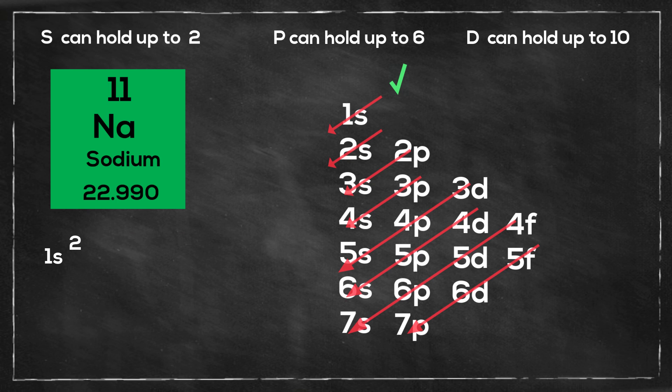Then I go to 2s, that will be 2s2. Then I will move to 2p, and it can hold up to six, that is 2p6. And that leaves one left for the 3s, so it will be 3s1.